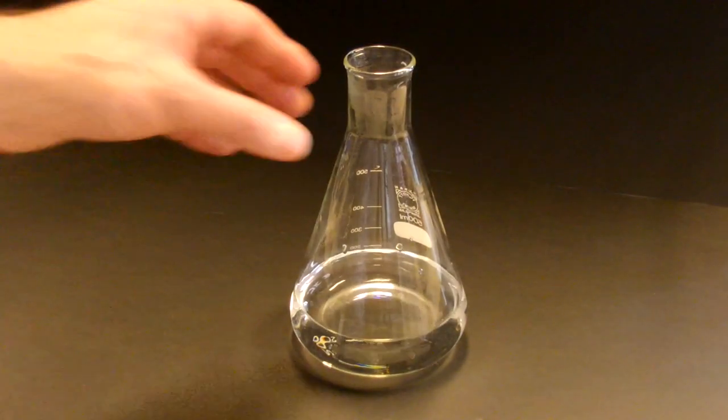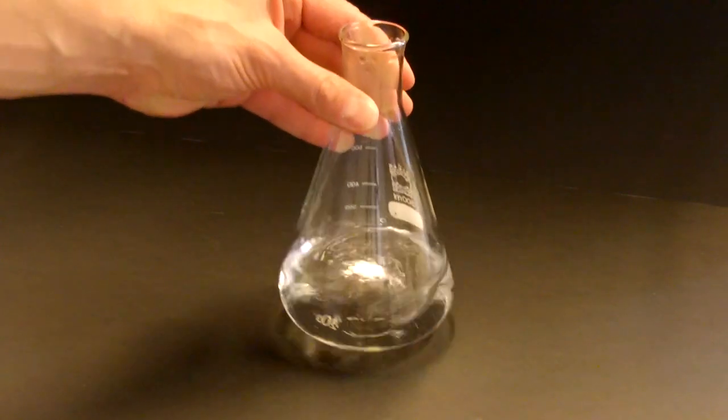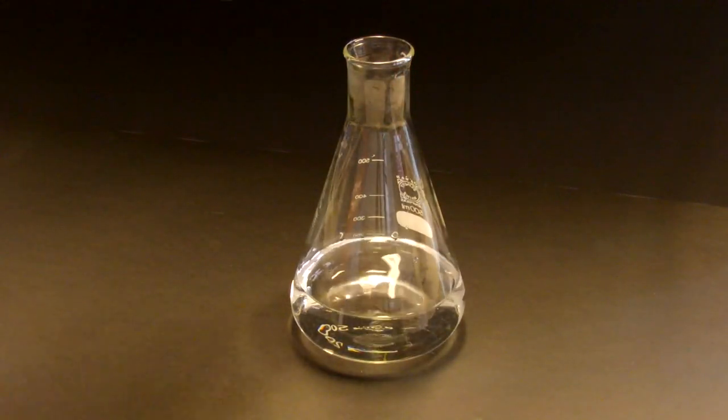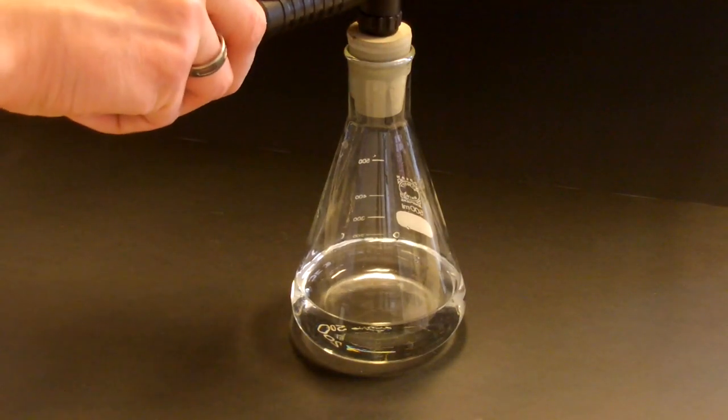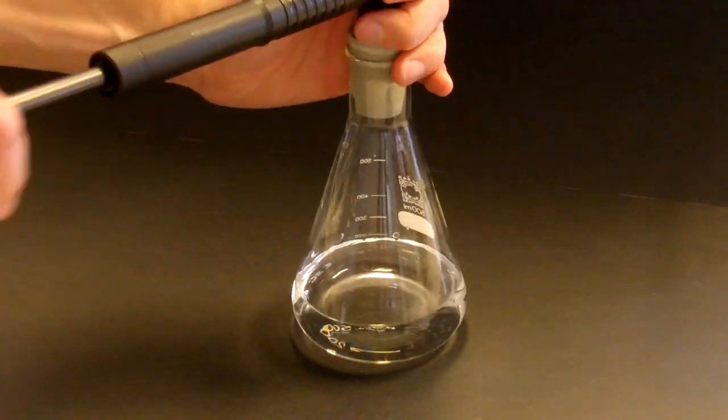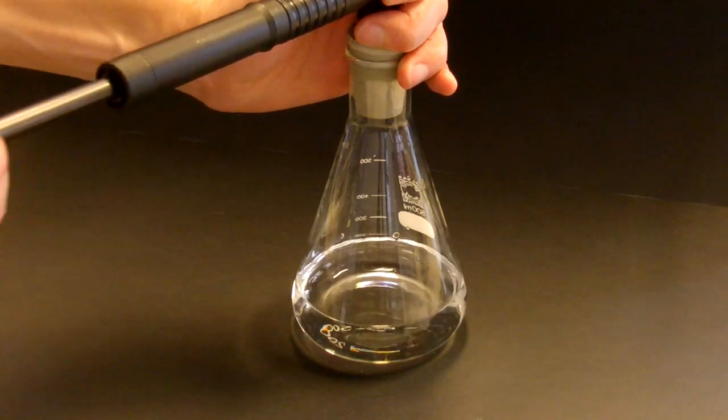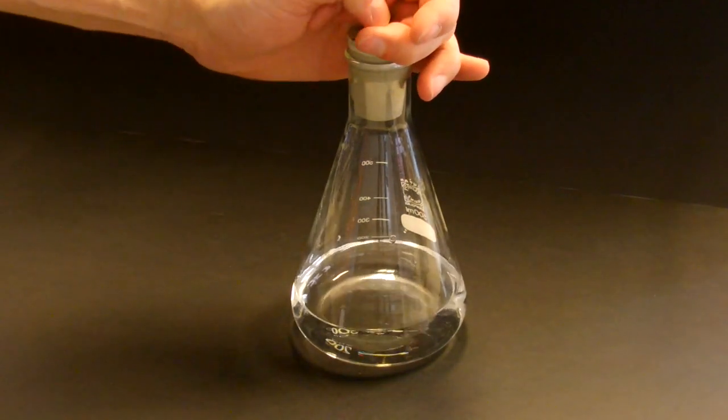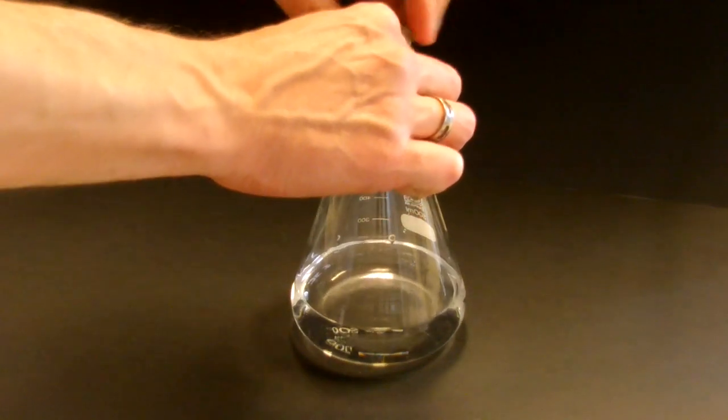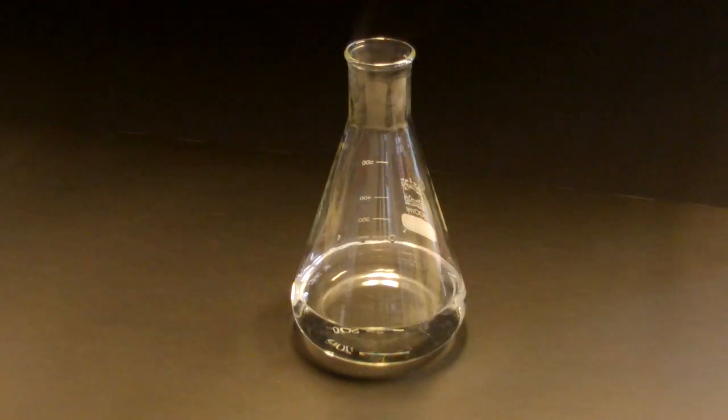Here I've got a flask with warm water. I'll shake it a bit, such that the air contains a lot of water vapor. Then I'll close it off with a stopper in which I've placed a valve of a bicycle tire. I'll pump some air in the flask. Now if I take the stopper off, the air will expand and cool. Let's see what happens. Nothing. No water droplets. No clouds.